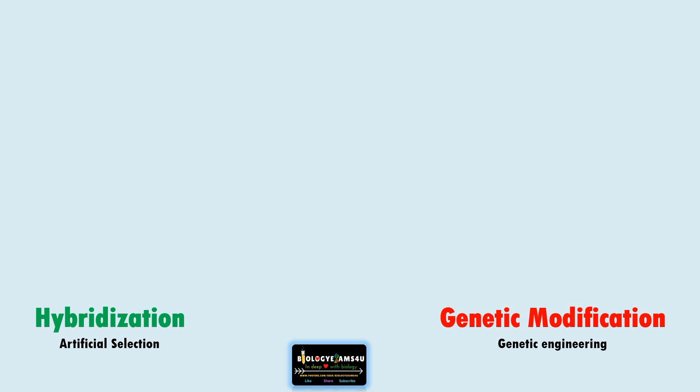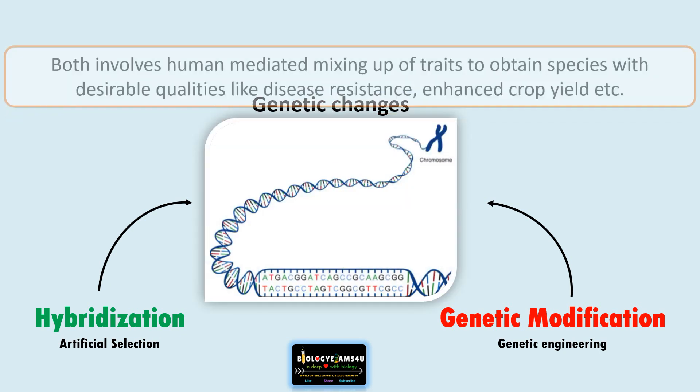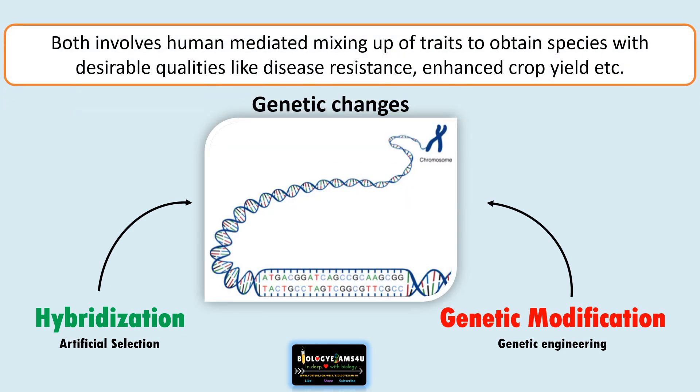Hi friends. In this video let us understand the difference between hybridization and genetic modification. Hybridization is also called artificial selection, whereas genetic modification is by means of genetic engineering, producing genetically modified organisms. In both cases, genetic changes are involved. The similarity is that both involve human-mediated mixing of traits or genes to obtain species with desirable traits like disease resistance and enhanced crop yield.